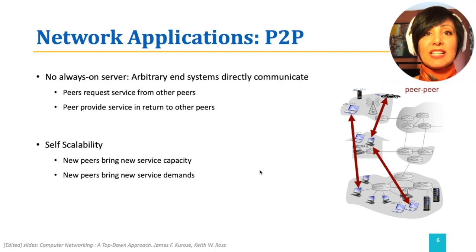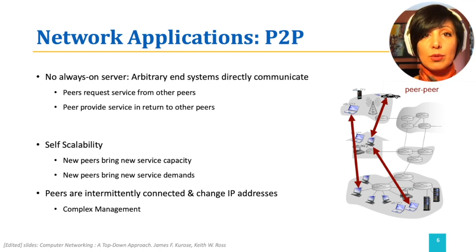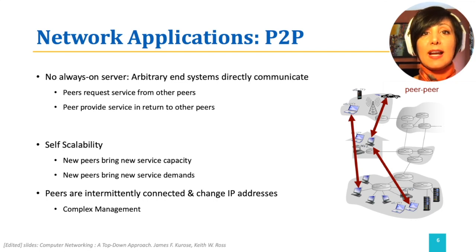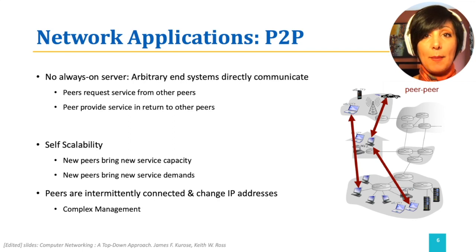The peer-to-peer architecture does not have an always-on server with a known address to respond to requests. Peers come and go and they have different IP addresses in their intermittent connections. Therefore, a complexity in peer-to-peer systems is about managing the peers and the existing service — remember this as the peer-to-peer 'come and go' challenge.